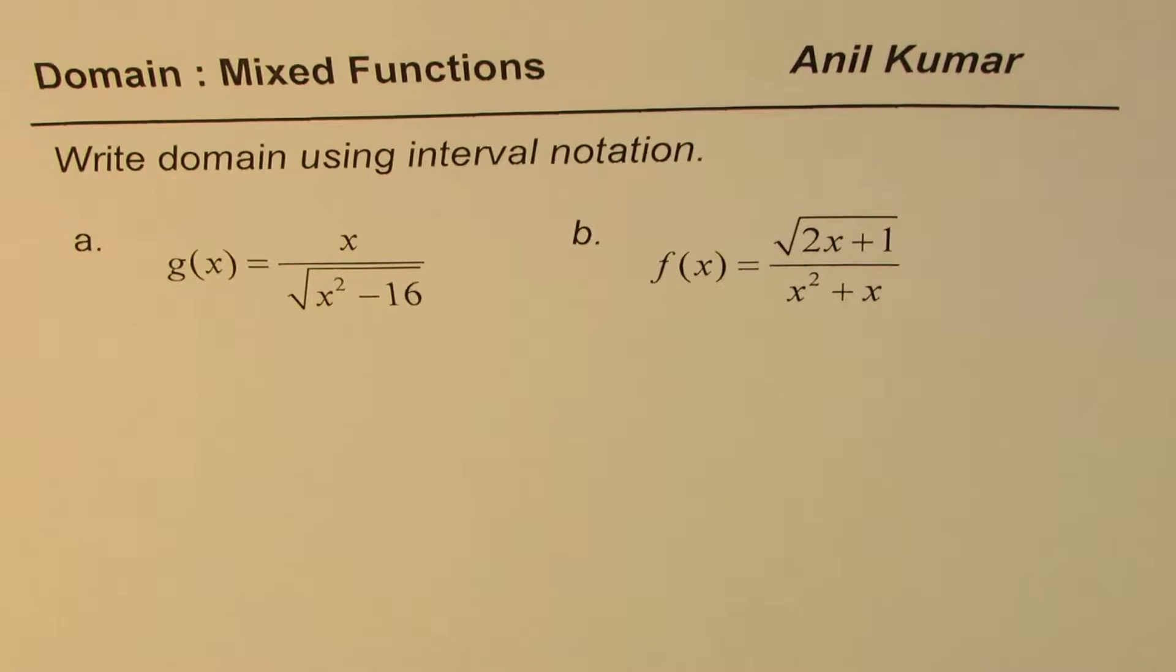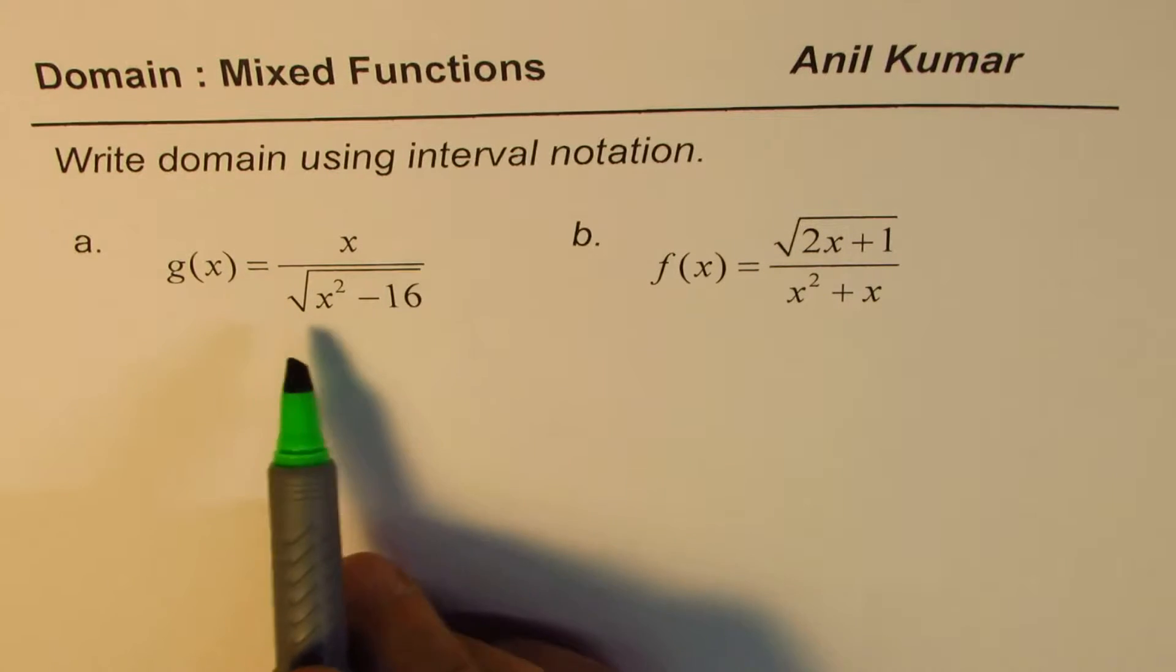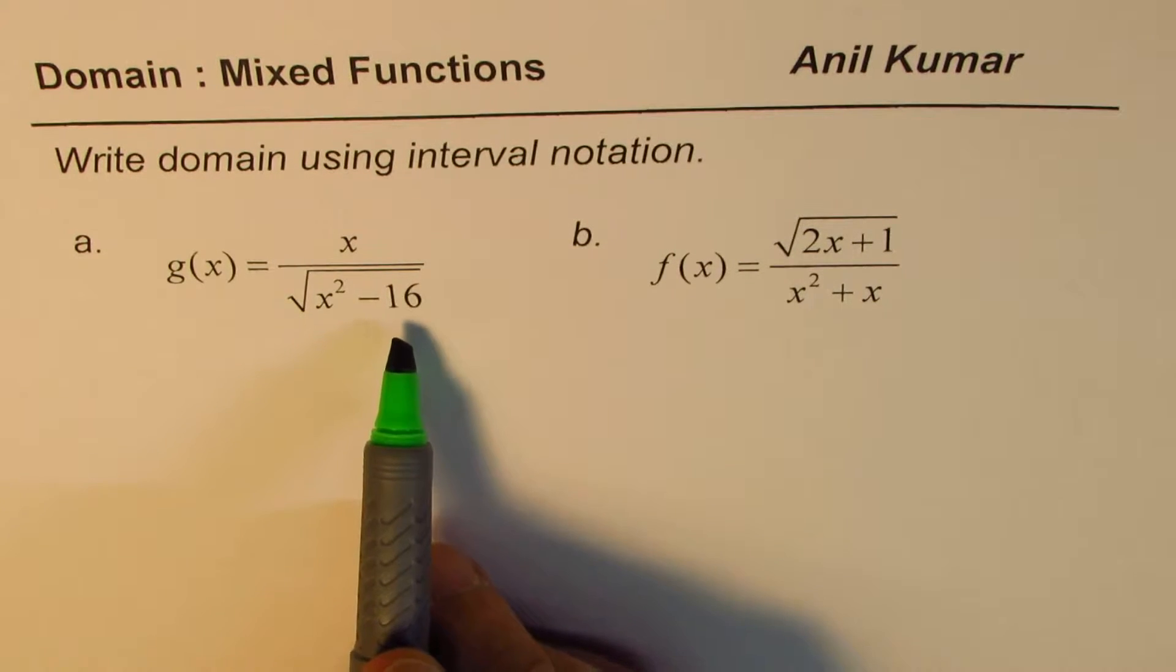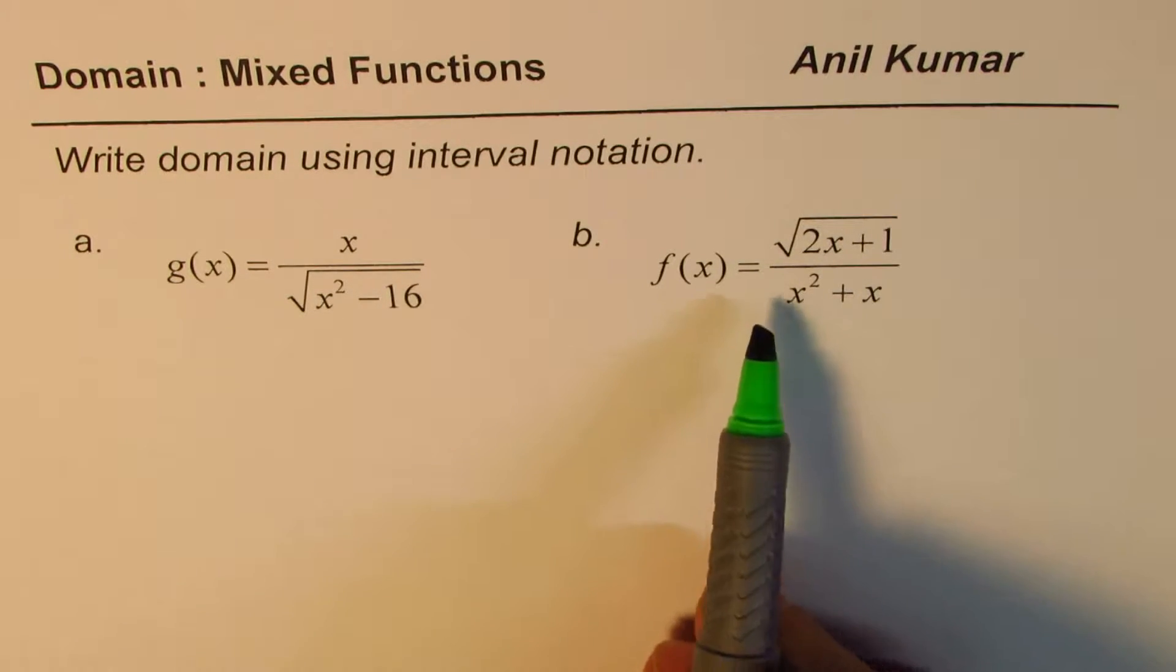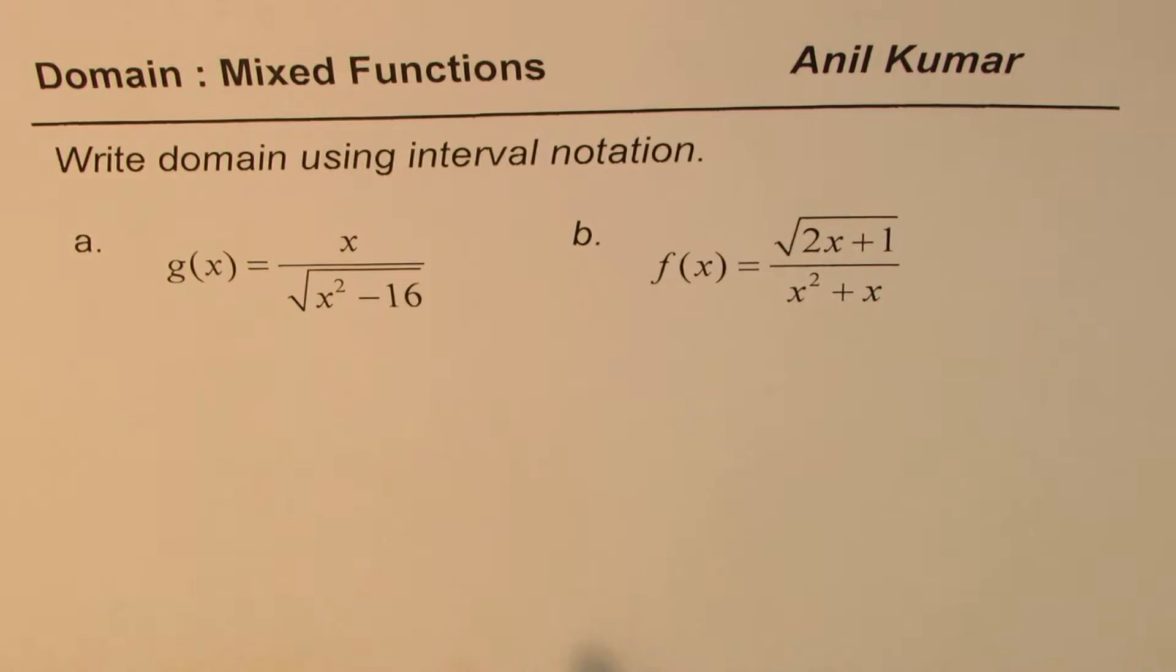I'm Anil Kumar and in this video we have taken up mixed functions where we have involved rational functions along with radical functions and we'll see how to find domain of such functions. There are two examples here: g(x) equals x over square root of x squared minus 16, and f(x) equals square root of 2x plus 1 divided by x squared plus x. You need to write the domain of these functions using interval notation.